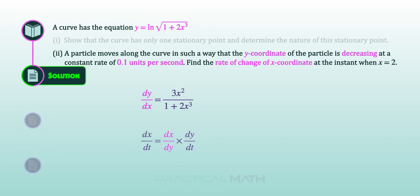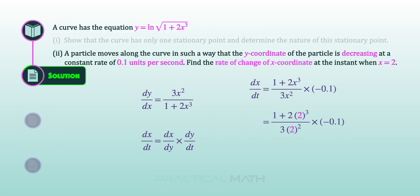We form dx/dt by writing dx/dy, which is the reciprocal of dy/dx found in Part 1, multiplied by dy/dt = −0.1. We then replace x = 2 from the question. The result is that x is increasing at the rate of 17 over 120 units per second.